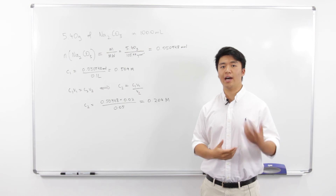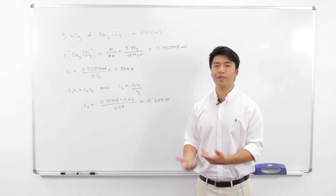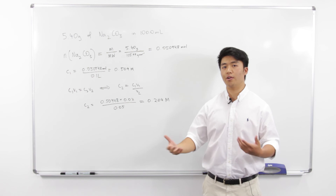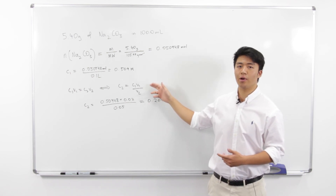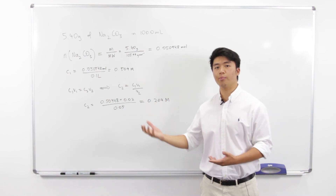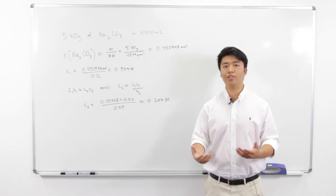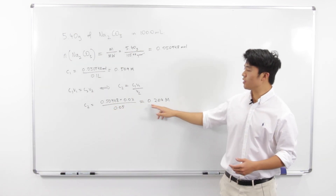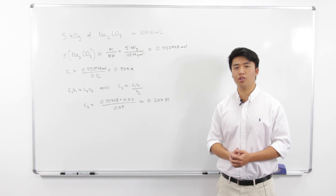Now onto the dilution. Here we're going to use our formula C1V1 equals C2V2. We've rearranged the equation to get C2 as our subject, so we have C2 equals C1V1 over V2. In this case C1 is what we just calculated, V1 is the 20 ml taken out, and V2 is the 50 ml volumetric flask. Plugging all these numbers in, we get 0.204 molar as the concentration of the diluted solution. To summarise, we've gone over standard solutions and how to make them, volumetric flasks and how to accurately use them, and finally dilutions and how to calculate their final concentrations.